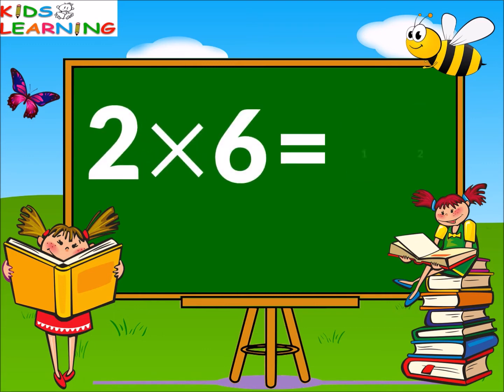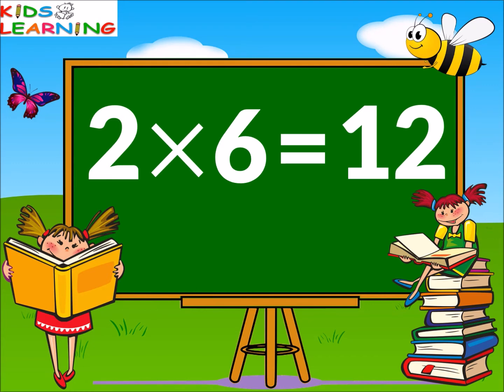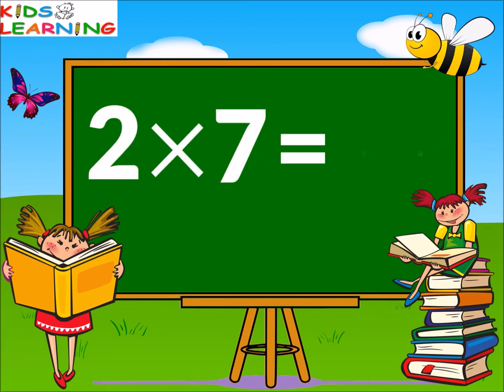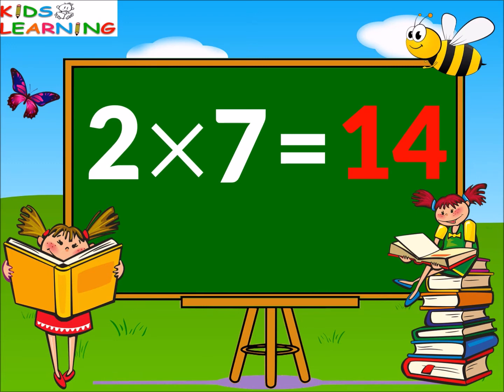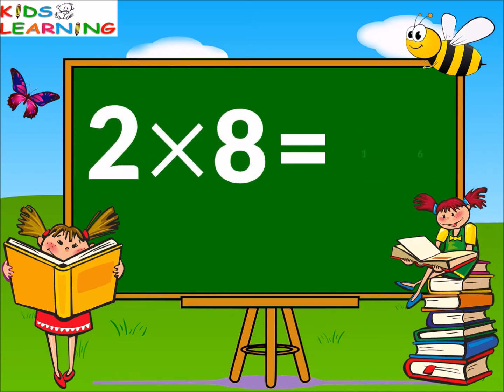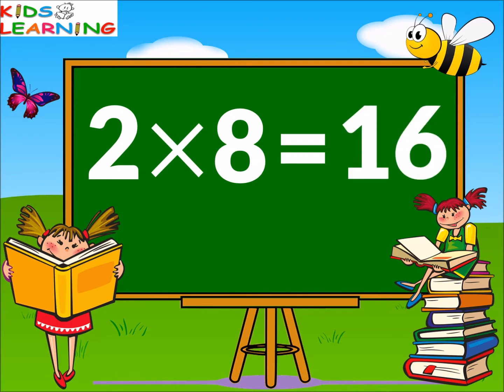Two sixes are twelve. Two sevens are fourteen. Two eights are sixteen.